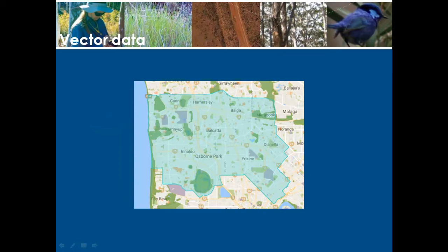One of the most powerful functions in a GIS is the ability to select features using the spatial relationship between them. This is called a spatial query. For example, you may wish to know how many parks are contained within a council area. First, you could use a query to select the council area based on its name, then a spatial query to select all the parks that fall inside that council.